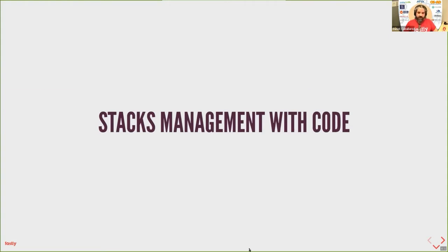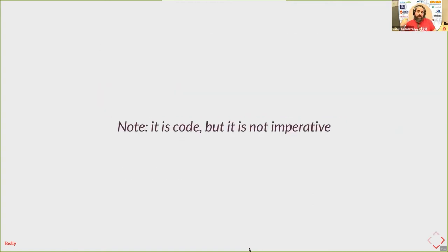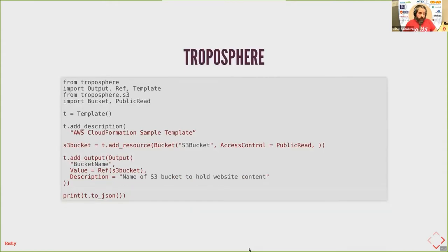The equivalent thing in Google Cloud is Google Deployment Manager, which is a bit more powerful — it lets you define templates with Python and similar languages. This model of defining configuration files was quickly identified by the community as an opportunity to do an equivalent definition but with code. We'll see tools or libraries that let you write code to define your stack. In this model, we are still declaring the desired state — we are not saying how to reach that state; it's just another way of writing a configuration file.